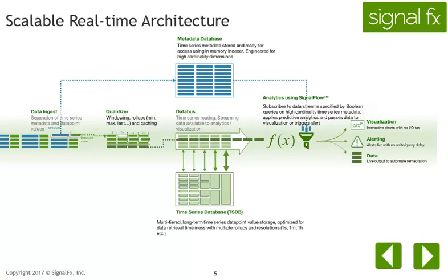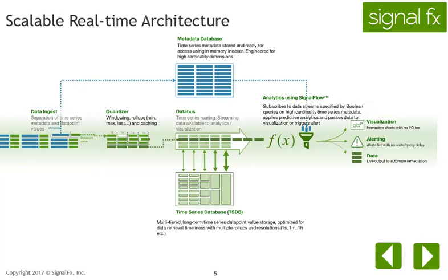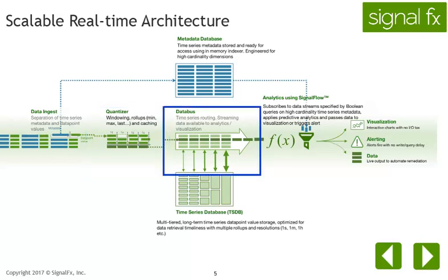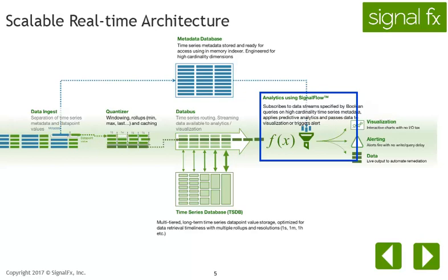Let us take a look at the SignalFX architecture now. Data comes into SignalFX in the form of data points. At Data Ingest, the data points are separated into metric time series. The metric time series are processed by the quantizer for multiple roll-ups and caching and sent to the data bus.